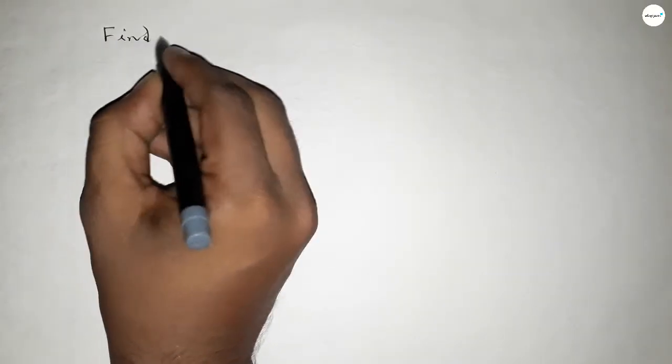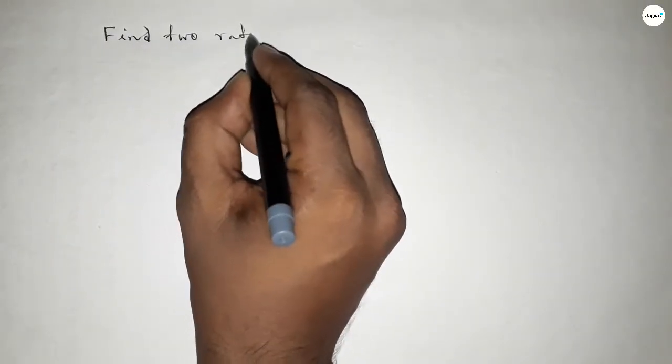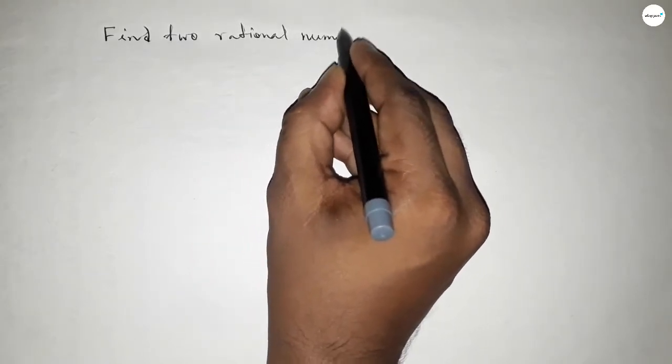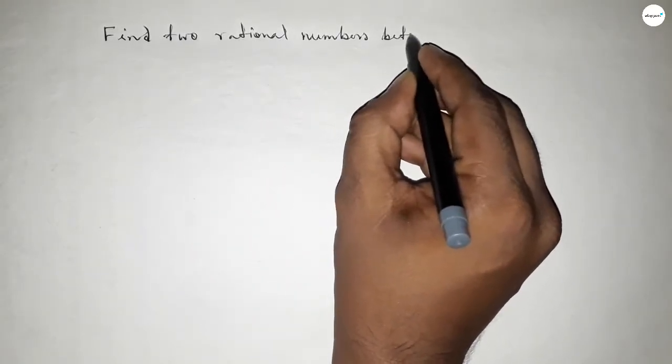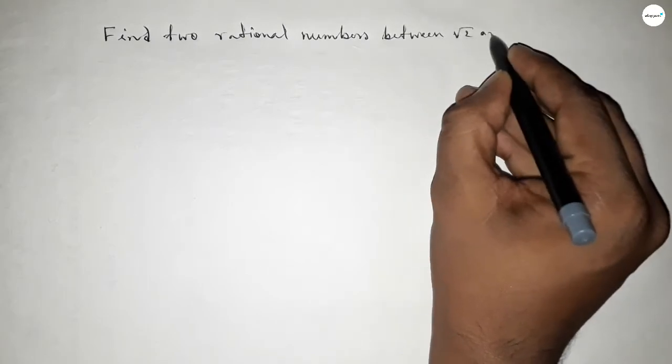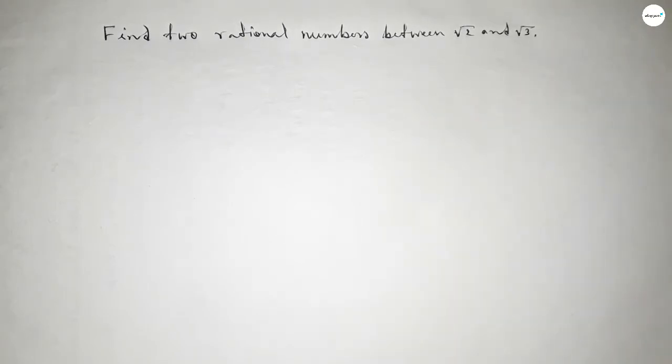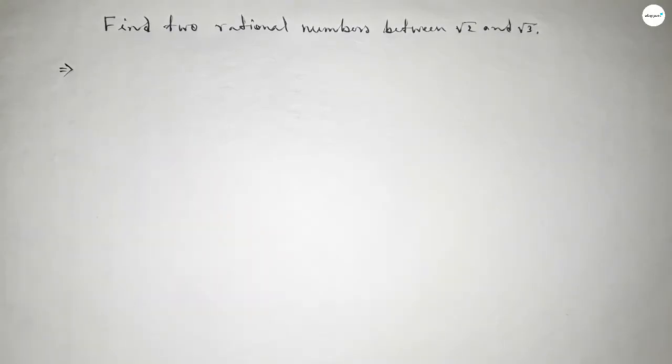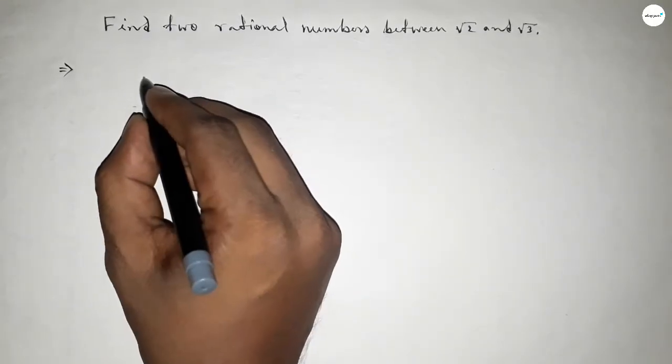Hi everyone, welcome to SSR Classes. Today in this video, we have to find two rational numbers between root 3 and root 2. So let's start. First of all, write down here the value of root 2 and root 3.